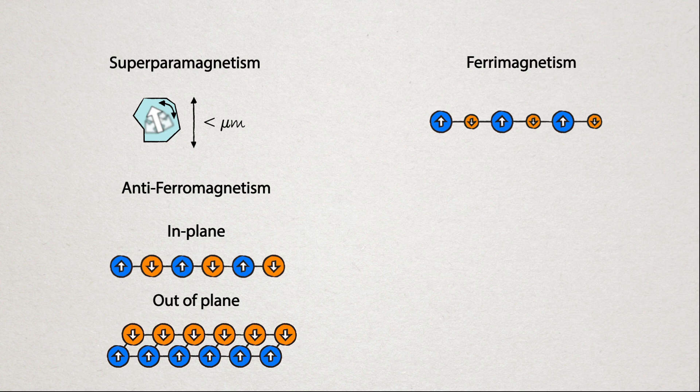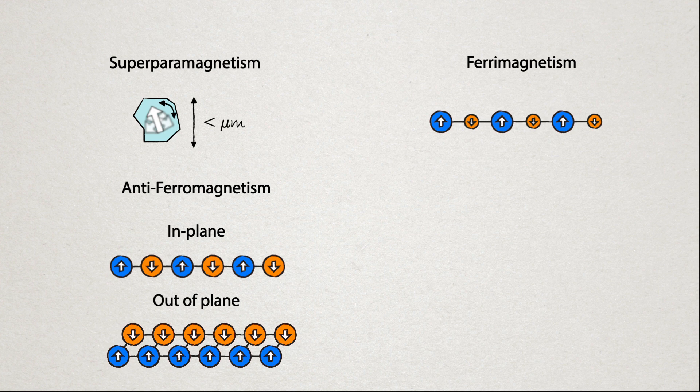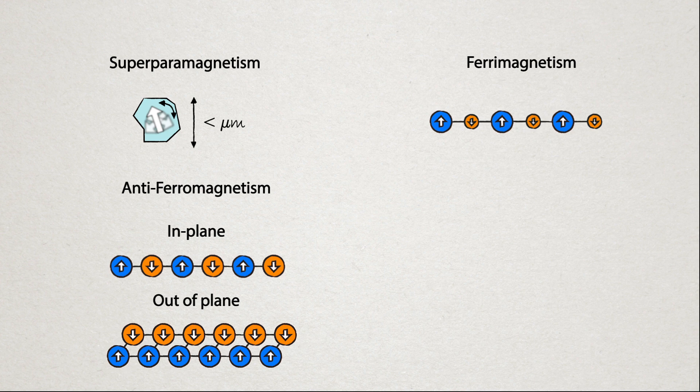Remember the oldest magnets that were recorded by the ancient Greeks? Lodestones? Well, they were made of magnetite, and this is actually ferrimagnetic, not ferromagnetic.